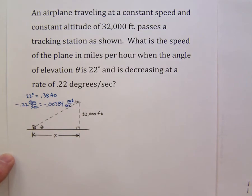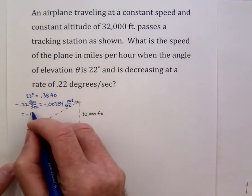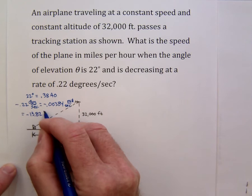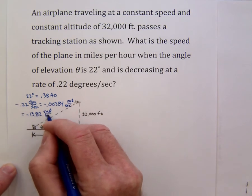But if we look even farther ahead to the desire to have the plane speed in miles per hour when we're finished we might even want to change this into radians per hour. And if we multiply by 3600 this gives us about negative 13.82 radians per hour.